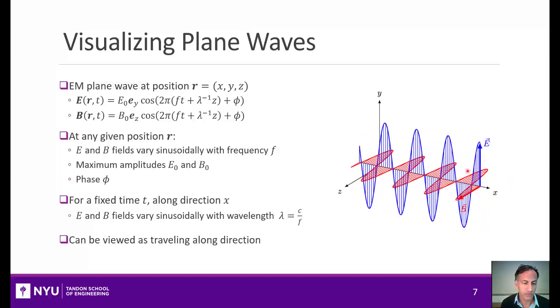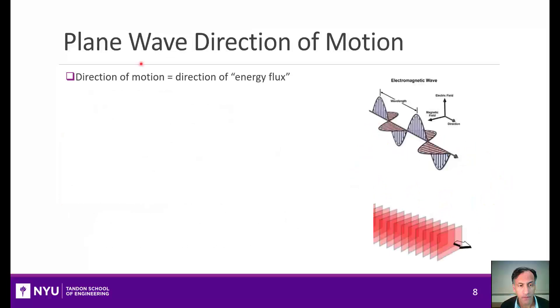A very important way to think about the direction of motion of a plane wave is that the direction of motion is also related to the direction of energy flux or the way that power is transferred in the plane wave. It's described by something called the Poynting vector. And the Poynting is the name, it's not the word pointing. It usually has the letter S, and it's the cross product of the electromagnetic fields.